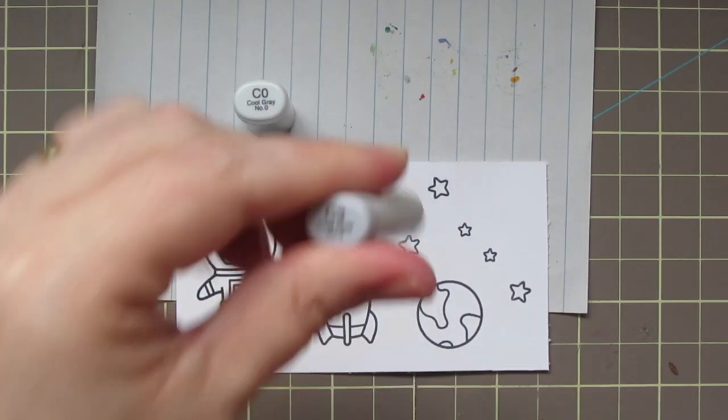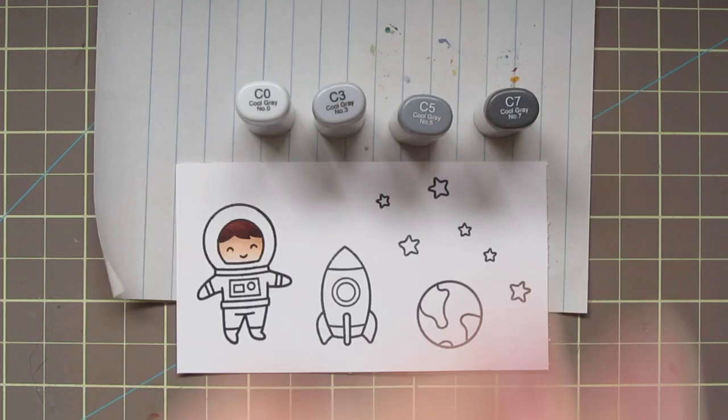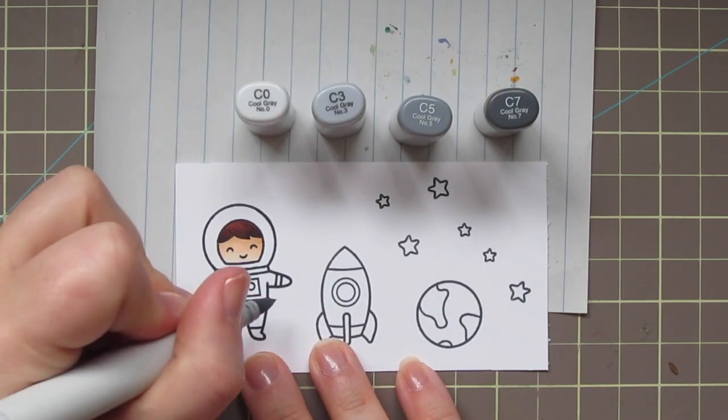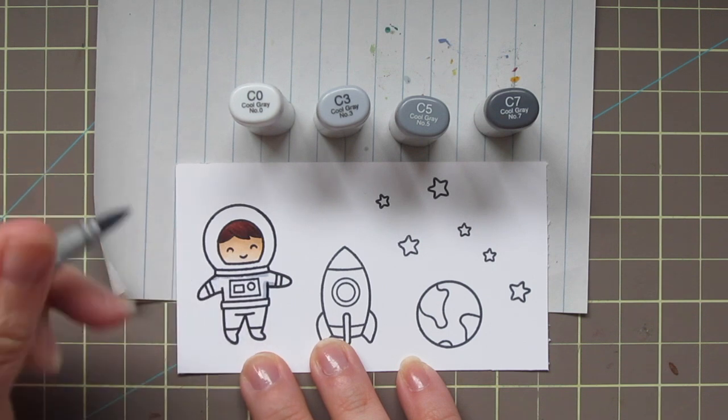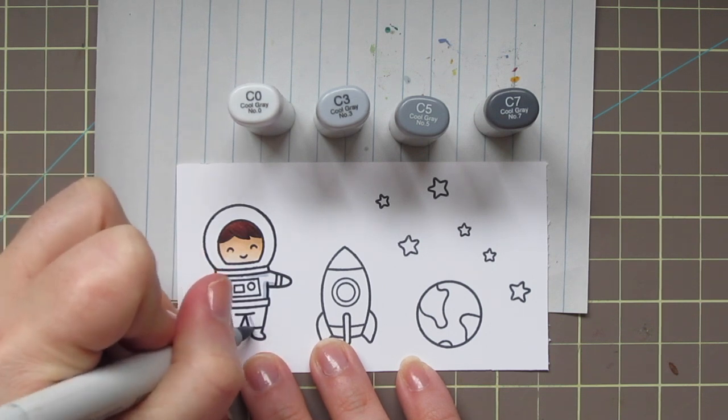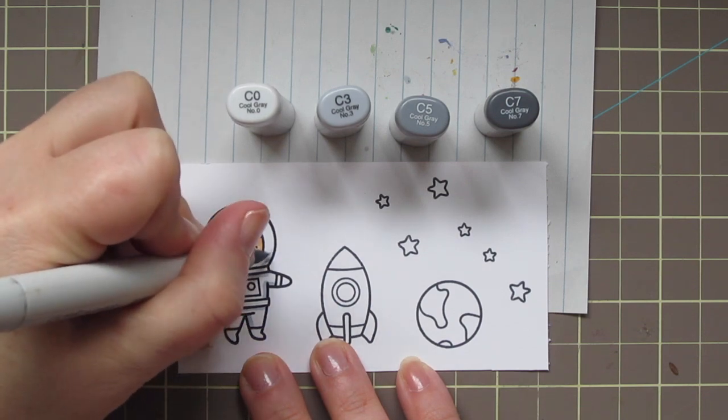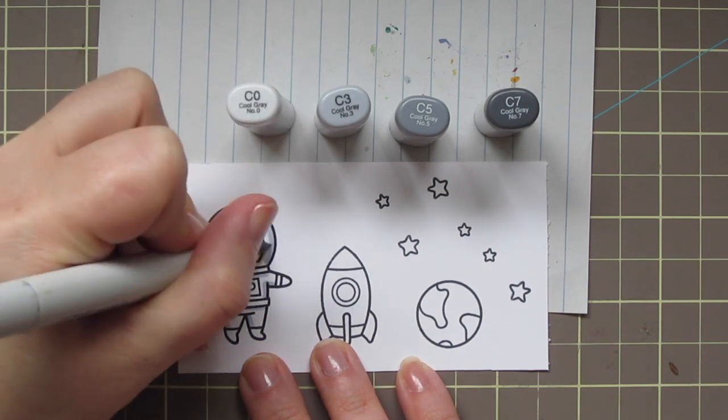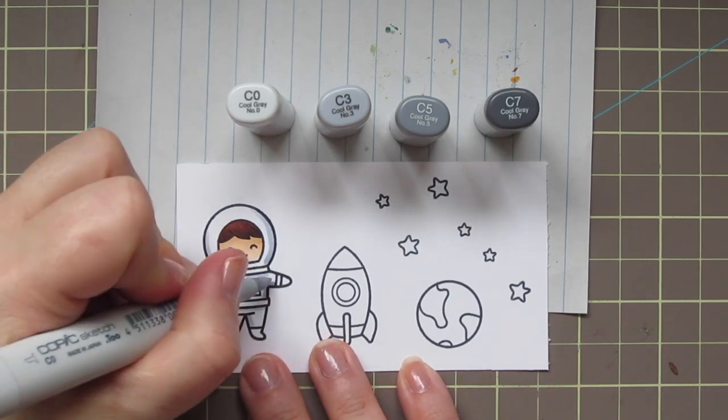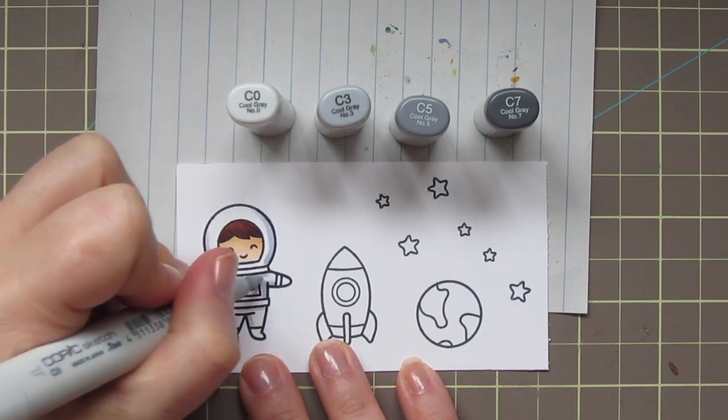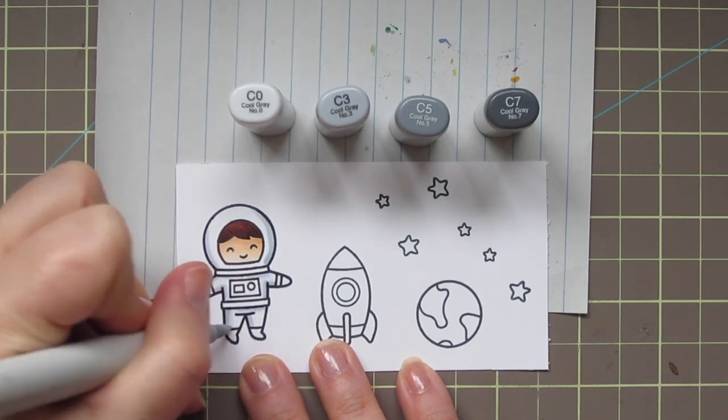For his spacesuit I'm using C0, C3, C5, and C7. I'm actually using C0 and C3 for the main part of his spacesuit and then I'll use the C5 and C7 for his gloves and boots. So I'm starting with that C3 and just adding a bit of shadow around the edges of things and just trying to make him look a little bit more three-dimensional, bring him to life a little bit and not so flat on the page.